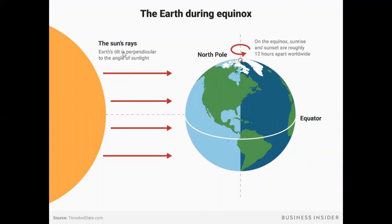So on the equinox, sunrise and sunset are roughly 12 hours apart worldwide. The sun rays are perpendicular, so both poles receive equal light — hence equal day and night. I hope you liked my video, thank you.